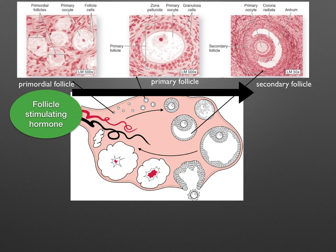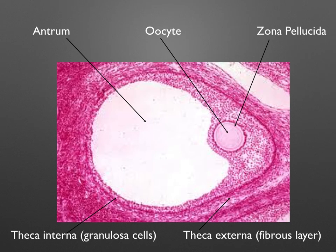Let's tie it all together. FSH is secreted from the pituitary gland, causing primordial follicles to develop into primary follicles. Most of these will break down by follicular atresia, but one will develop into a secondary oocyte surrounded by granulosa cells. The cells of the membrane granulosa divide to form an outer fibrous layer called the theca externa and an inner layer called the theca interna, which secretes a fluid forming the antrum. This structure is then called the Graafian follicle.